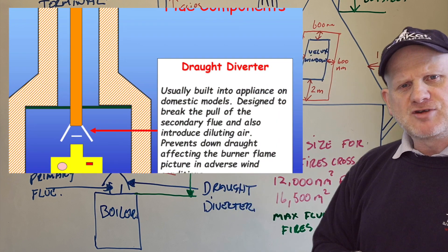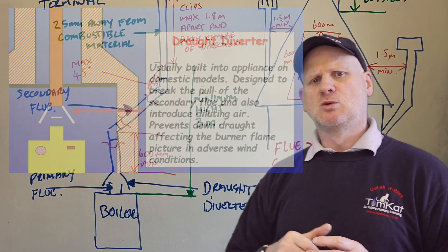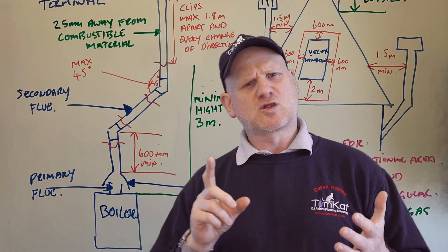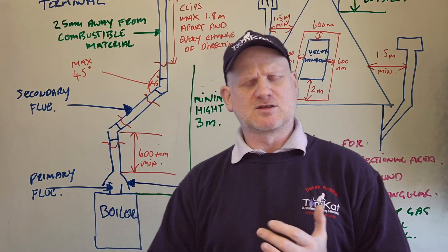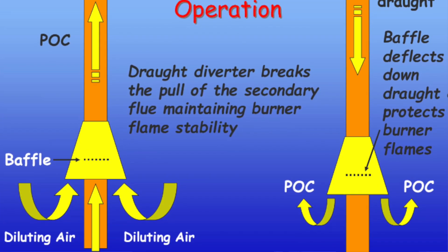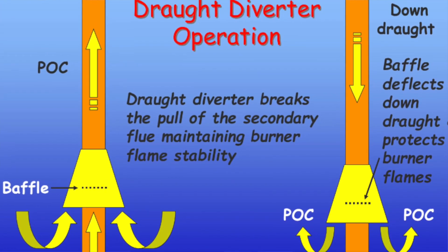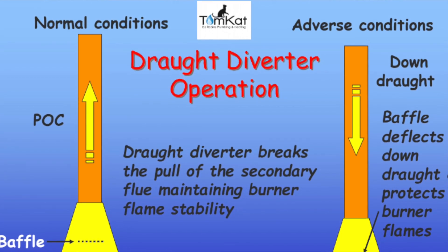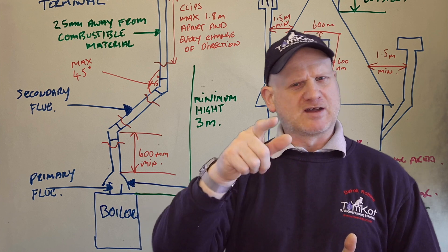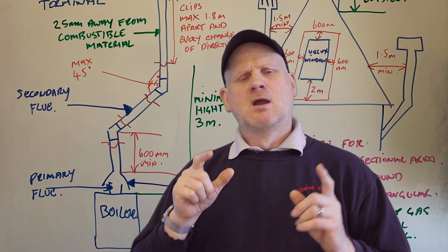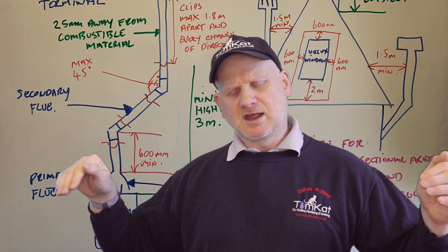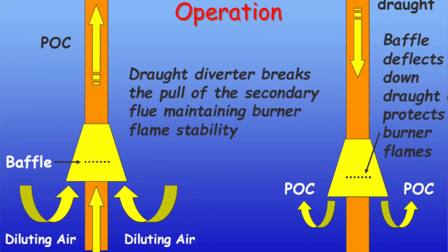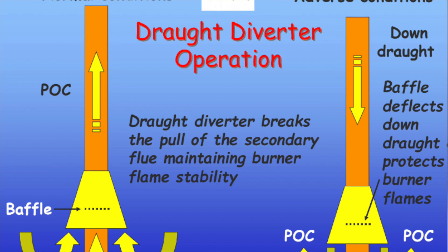The next component is the draft diverter. It does three main things. First, if we get downdraft coming down the flue, it pushes the products of combustion away from the burner so it doesn't affect the pilot or the burner. Second, it allows fresh air into the flue system as the boiler is running to dilute the products of combustion.